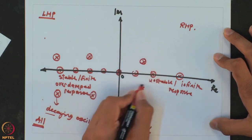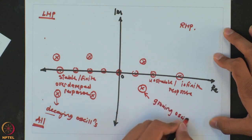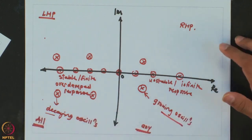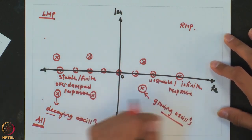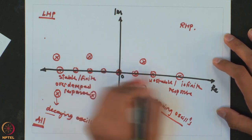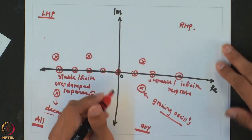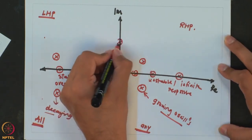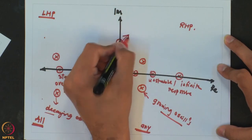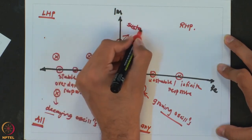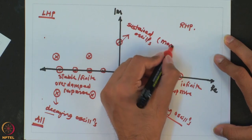Similarly, if we have complex conjugate poles in the right half plane, these give growing oscillations — the oscillation magnitude keeps increasing as a function of time, again giving an infinite response as time t goes to infinity. The last remaining case is poles that are complex conjugate but with real part equal to zero — purely imaginary poles. In that case you get sustained oscillations, also known as a marginally stable process.